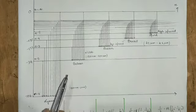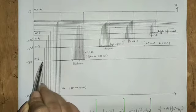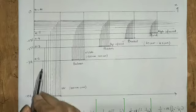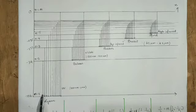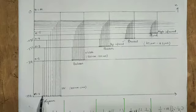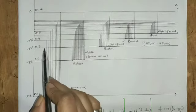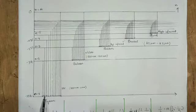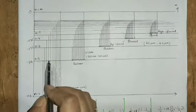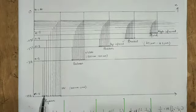The electron transitions from the third energy level to the second energy level, then to the first energy level. When we release the light photon at this point, we will see the spectrum line — this is the first spectral line. When the electron jumps from n=3, a photon is released — this is the second spectral line.